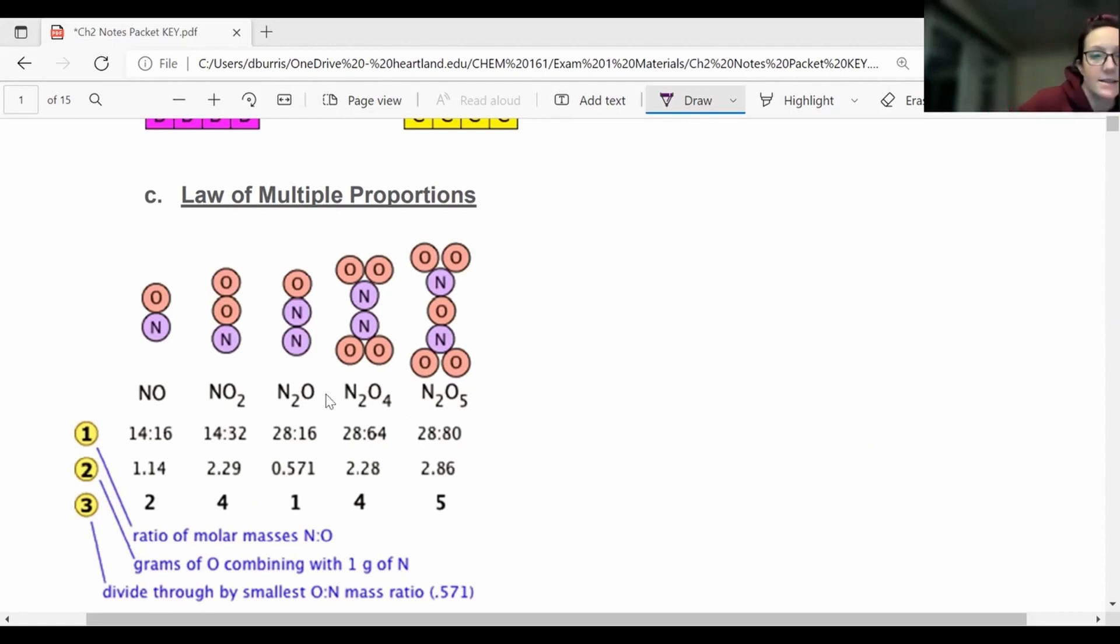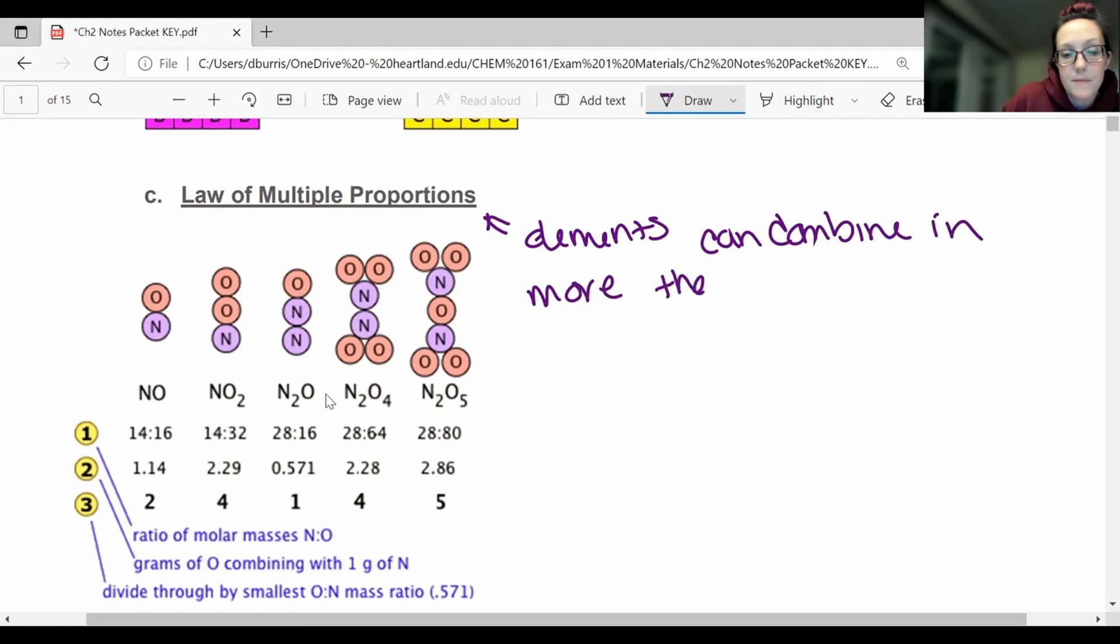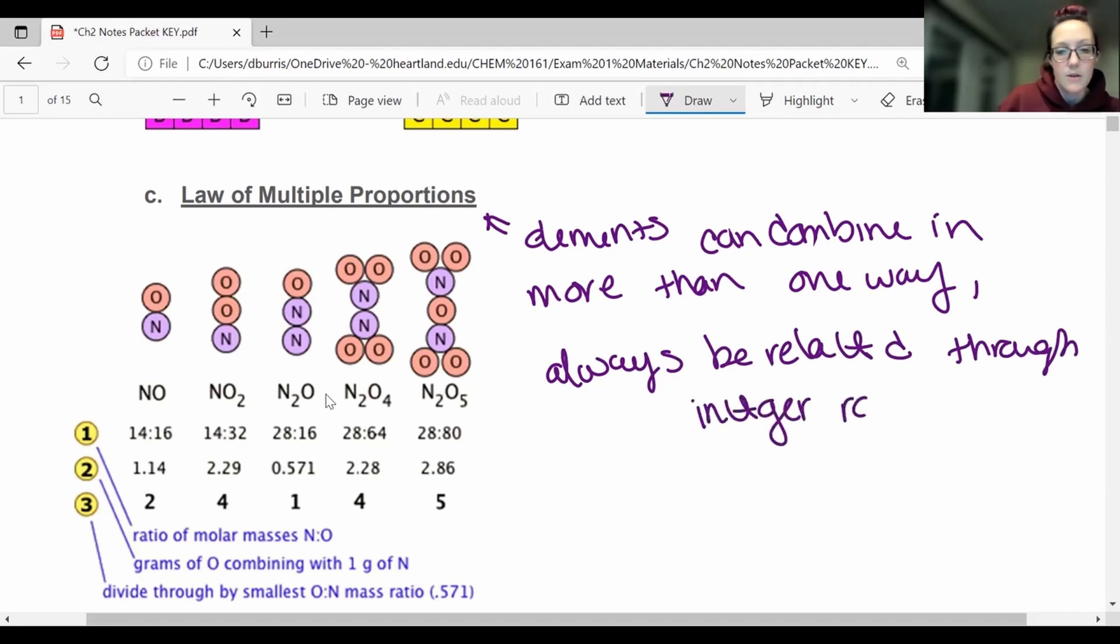The law of multiple proportions says, however, that elements can combine in more than one way, like we just are looking at right now. So elements can combine in more than one way, though they are always going to be related. Okay, so like nitrogen-notch NO is related to NO2 in some type of integer ratio. So elements can combine in more than one way. They will always be related through an integer ratio. And I'm going to do an example here in a moment, okay? But if you do the mass ratios of them, you're always going to get a whole number ratio because nitrogen and oxygen, it's the same elements being used.